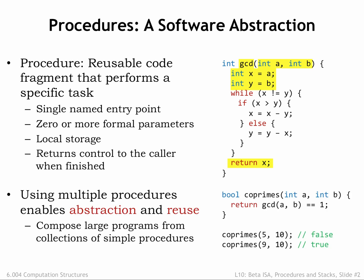Here we see another procedure, coprimes, that invokes the GCD procedure to compute the greatest common divisor of two numbers. To use GCD, the programmer of coprimes only needed to know the input-output behavior of GCD, i.e. the number and types of the arguments and what type of value is returned as a result. The procedural abstraction has hidden the implementation of GCD while still making its functionality available as a black box. This is a very powerful idea, encapsulating a complex computation so that it can be used by others.